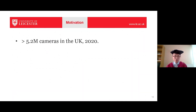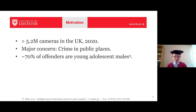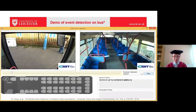Let me give you the motivation for why we do this work in video surveillance. In 2020 in the UK we have around 5.2 million CCTV cameras. The use of these cameras is to prevent crime and protect privacy in public places. Based on statistics, about 70% of offenders are young adolescent males — teenagers. To narrow down the research for these offenders, our research questions are: what is the age and gender of the target, and what is this person doing at that moment?